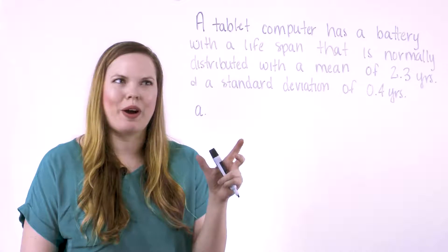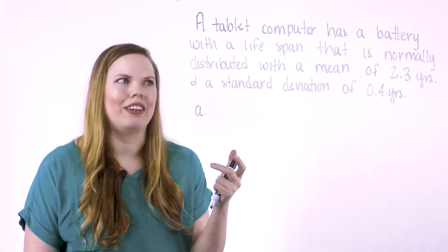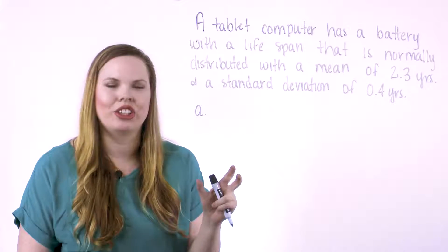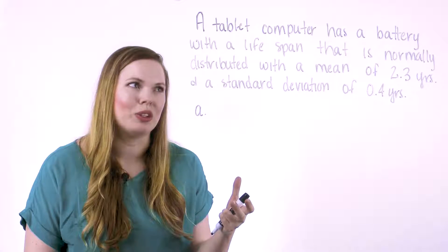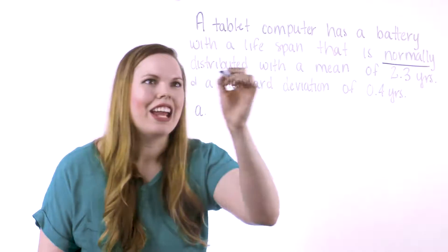So I'm going to put a problem up here. We have a problem here with a tablet computer and a battery lifespan. A normally distributed mean and standard deviation are given, have to be given in any kind of normal distribution problem. So we're looking for this as kind of our key.